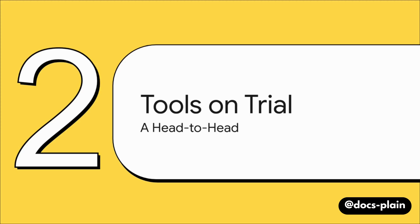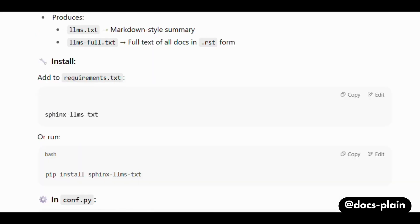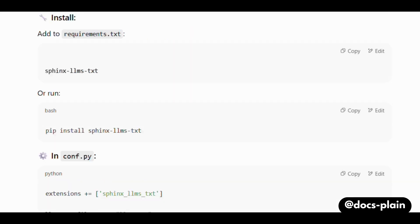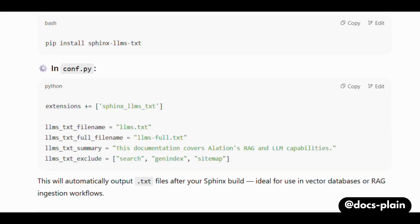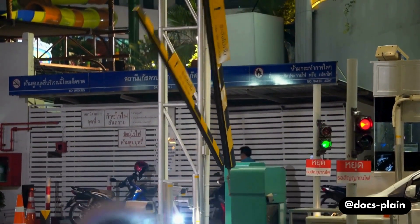First things first, let's talk about how hard these are to set up. The meta-directive is built in, so the effort is basically zero — a clear winner in terms of configuration. But it requires a manual effort on each RST page to define metadata. There's no index generation since it remains hidden for the user, and it's primarily aimed at search engine optimization. For Sphinx Tags and LLMS.txt, you just need to install the Sphinx extensions by adding a single line to your requirements.txt file, and you're done. In every case, the barrier to getting started is incredibly low.